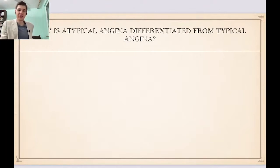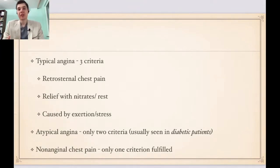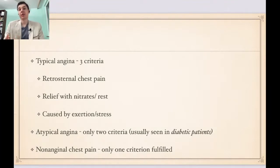How do we define typical angina? Typical angina has three key elements. Firstly, it is relieved with nitrates or with rest. Secondly, it is a retrosternal chest pain. And thirdly, it is caused by exertion or stress.